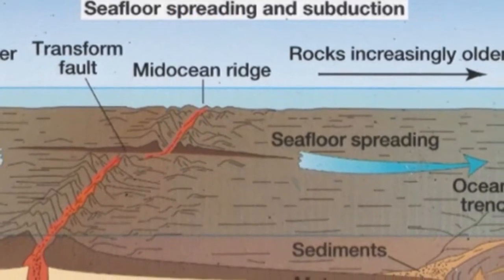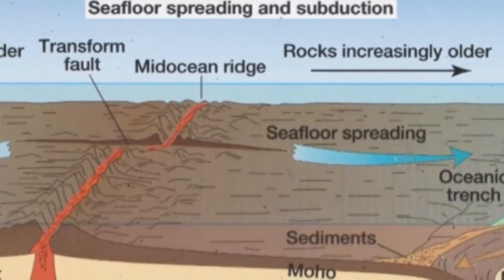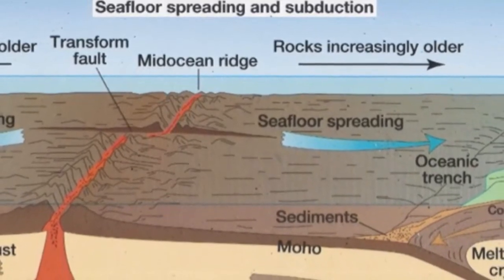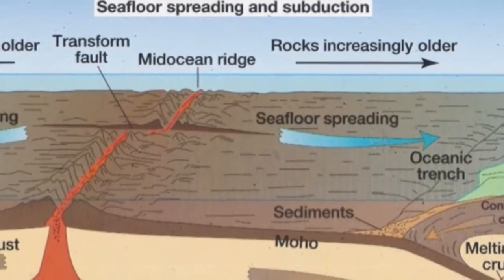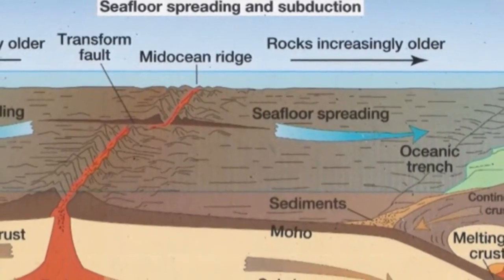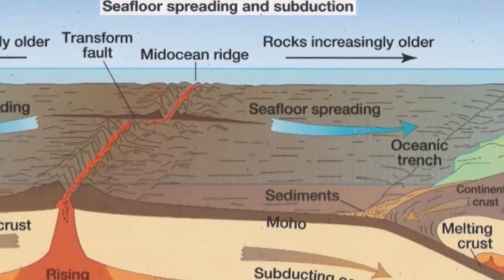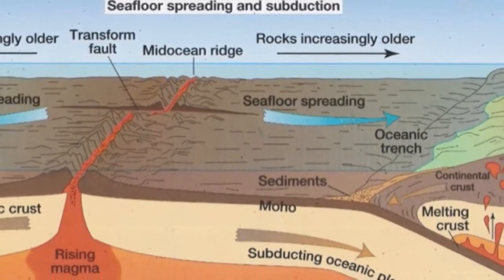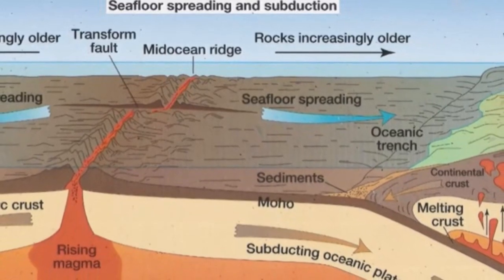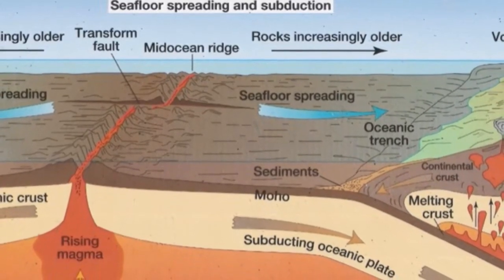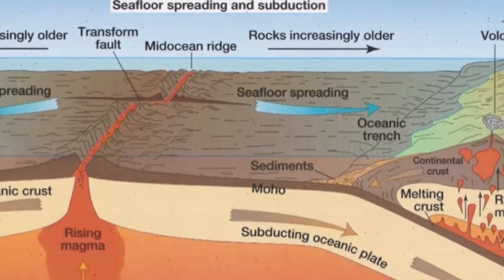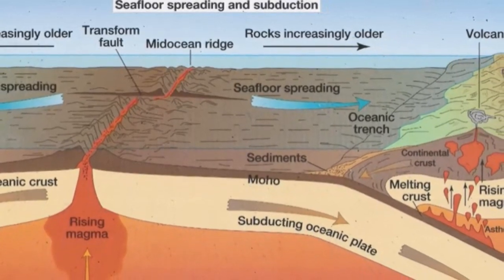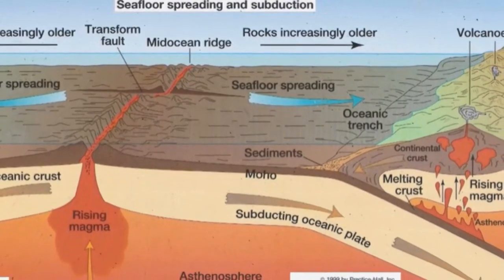The asthenosphere is a comparatively hot and weak zone. As material in the upper mantle ages or cools, it becomes rigid. Thus, the upper portion of the asthenosphere is converted to lithosphere simply by cooling. Newly formed oceanic lithosphere will continue to thicken for about 80 million years. Thereafter, its thickness remains relatively constant until it is subducted.